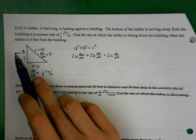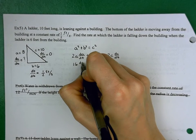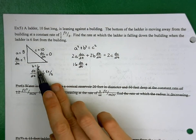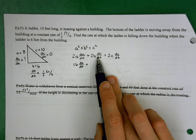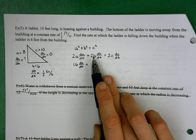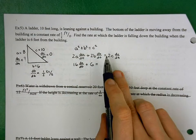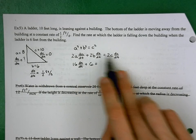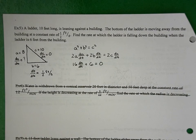Now plug in. A = 8, so 2 times 8 is 16. B = 6 and dB/dt = 1/2, so 2 times 6 times 1/2 = 6. C = 10, so 2 times 10 is 20, times dC/dt which is zero. Now solve for dA/dt.